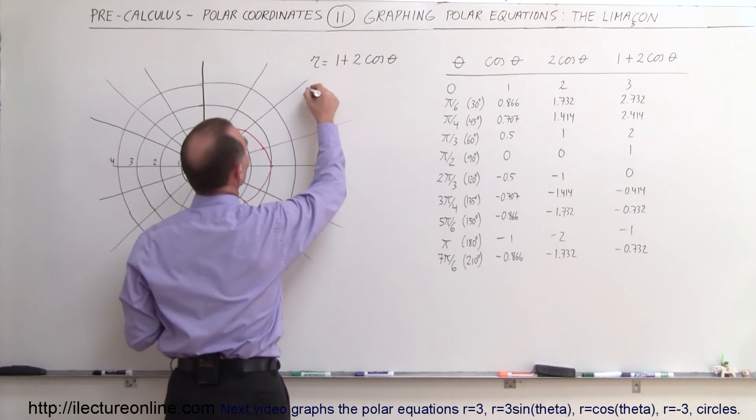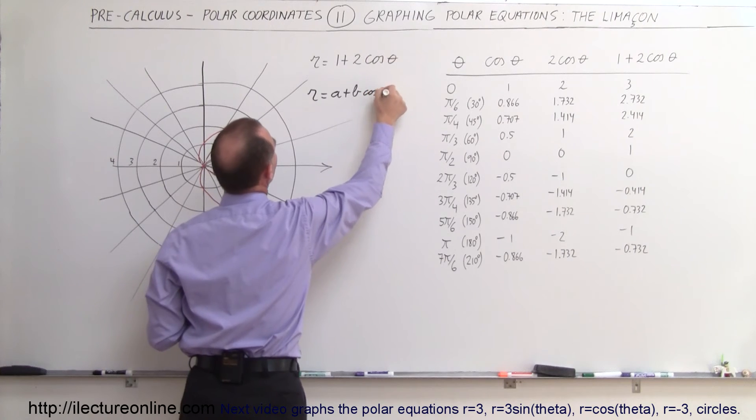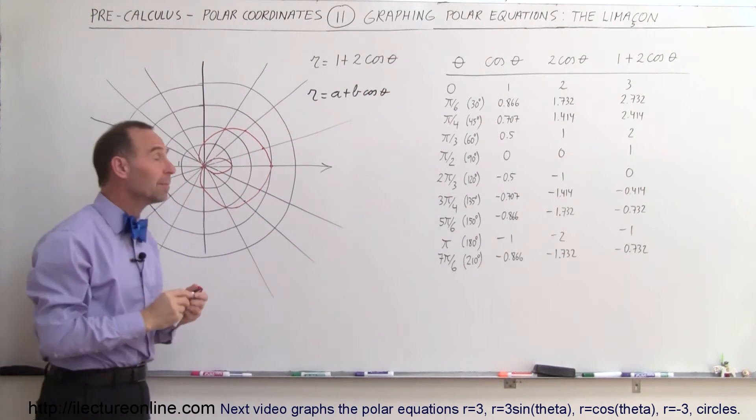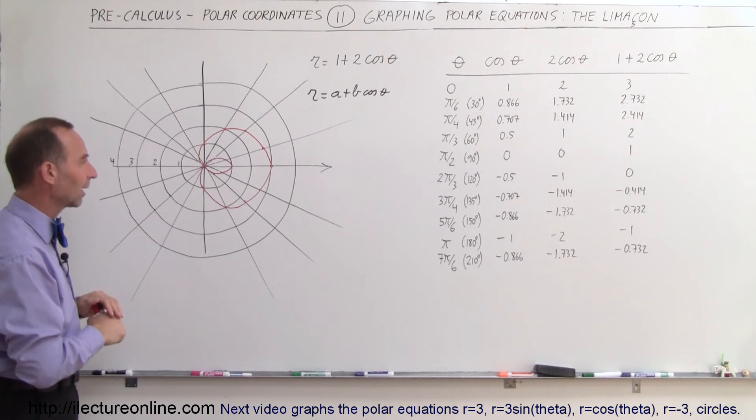So let me put the general equation. The answer r is equal to a plus b times the cosine of theta. Depending upon the values of a and b, this will change shape. And we'll do some examples later on to show you what that looks like.